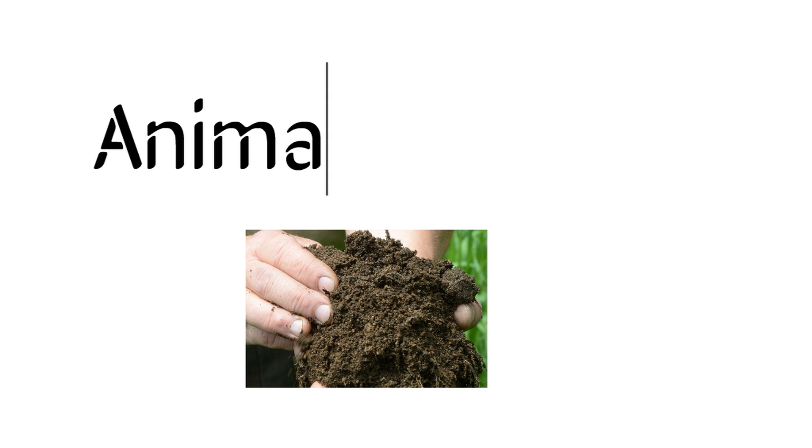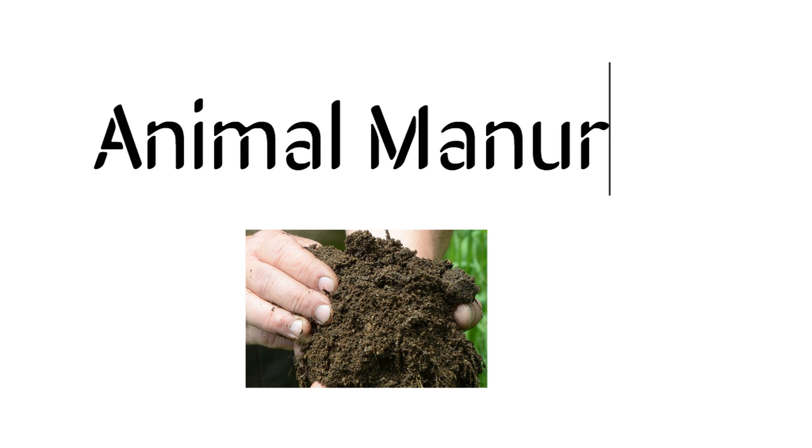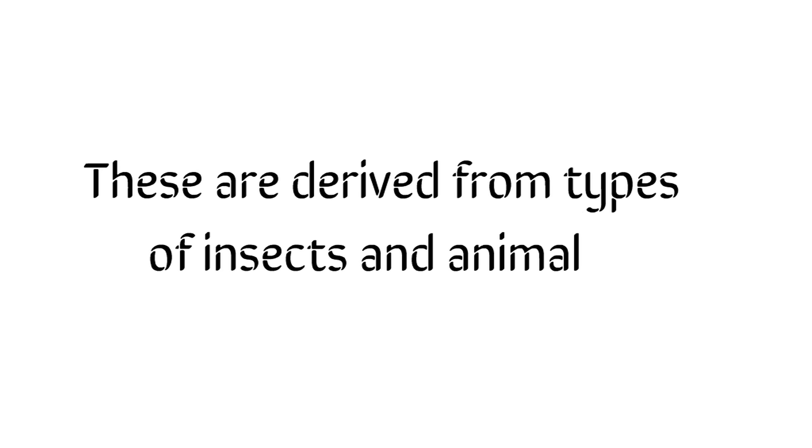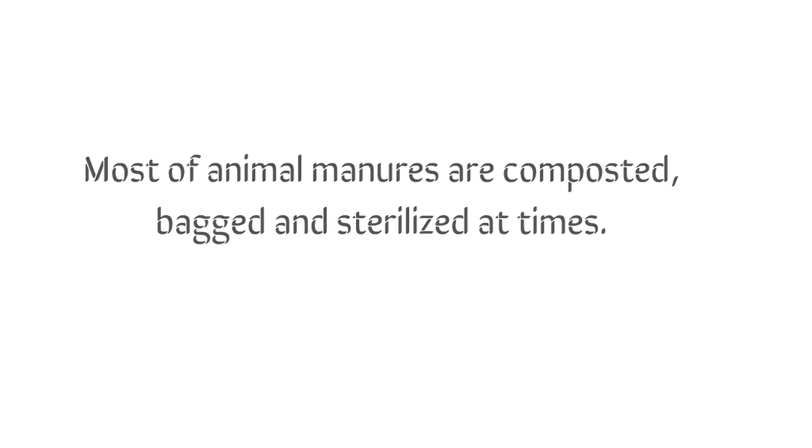Animal Manures. These are derived from types of insects and animals. Most animal manures are composted, bagged, and sterilized at times. Animal manure nutrient composition varies depending on the bedding, animal, and method of storing the manure.